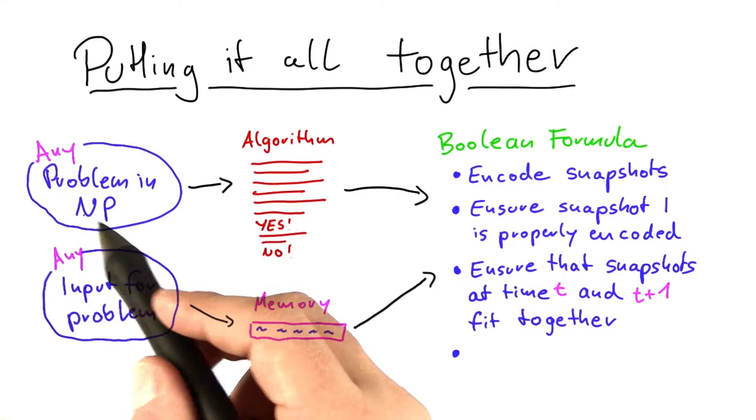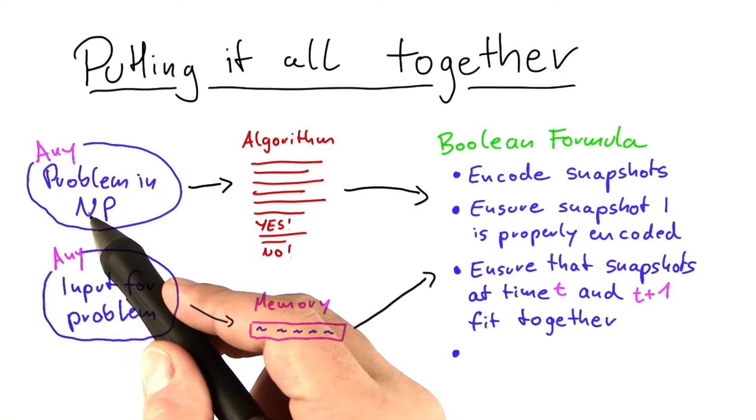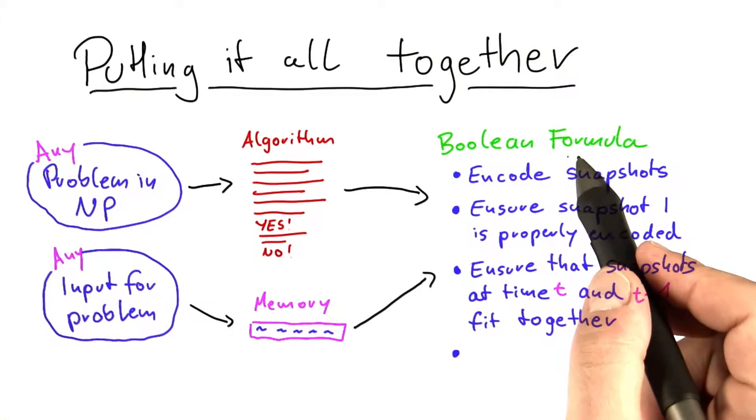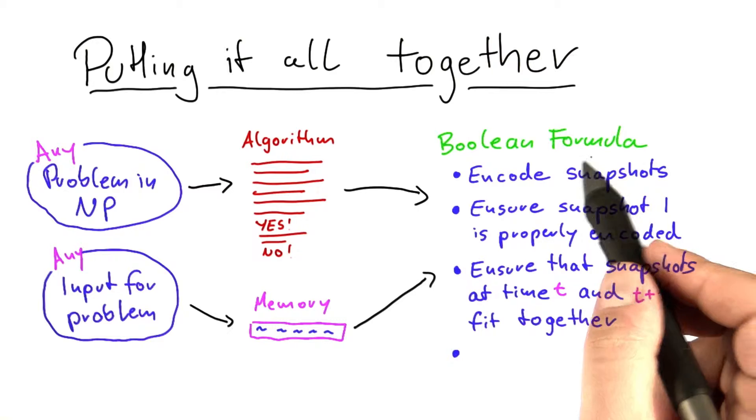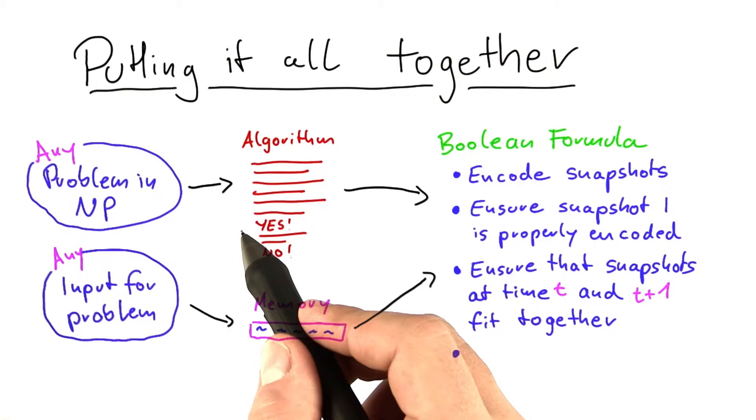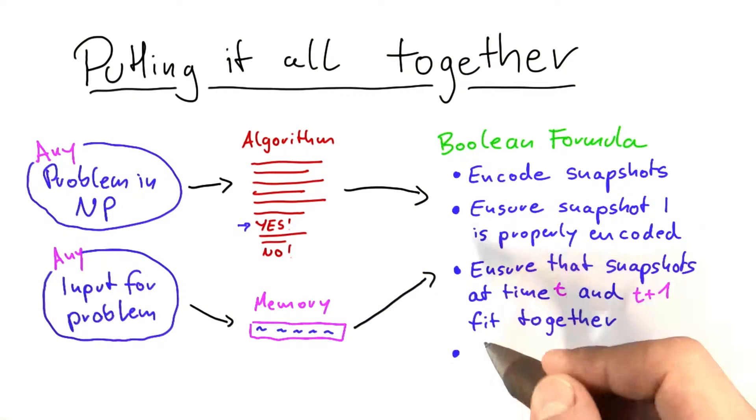And then finally, since this here is a decision problem, we want to ensure that the Boolean formula can only be satisfied if at a certain point in time the algorithm returns yes. So this is the last part we have to add to the Boolean formula.